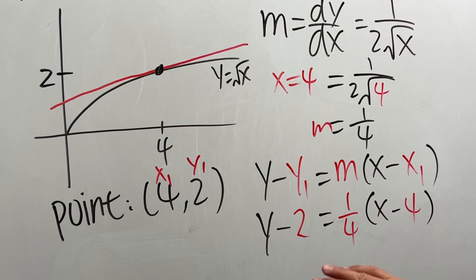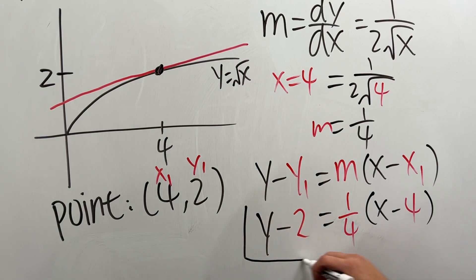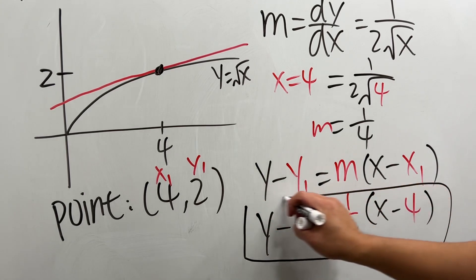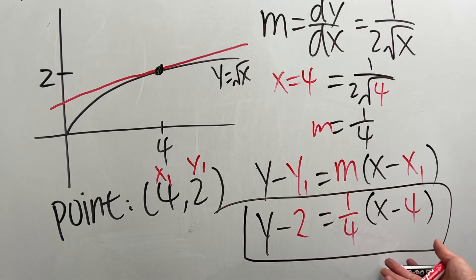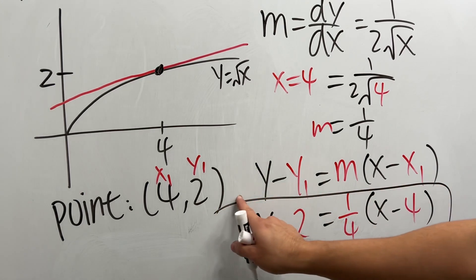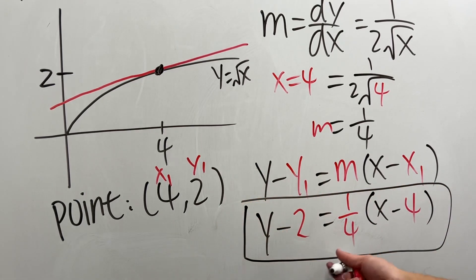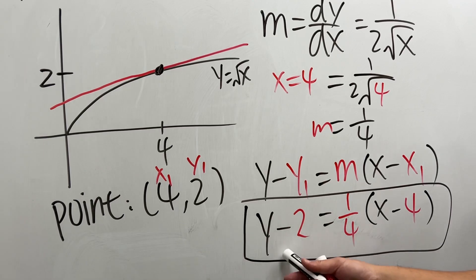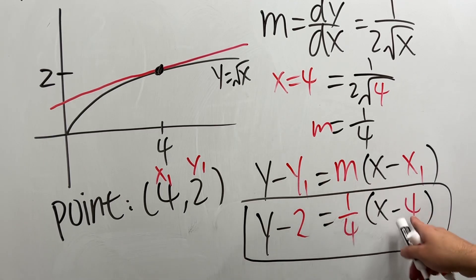I'm going to leave this to you guys to simplify. This is the equation in point-slope form — nothing wrong with that. If you want slope-intercept form, go ahead, distribute, and then move the 2 over. That's all.